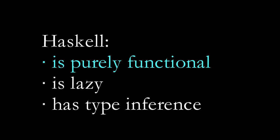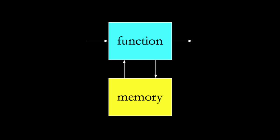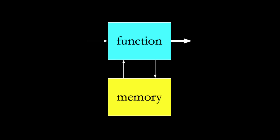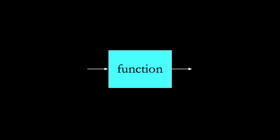In most other programming languages, you can think of a function like this: when we call it, the function takes input and looks at the state of memory — the values of variables. The function can then either modify what's in memory (this is called a side effect), return a result, or both. Haskell is a purely functional language, so functions never consult memory or have side effects. Given the same input, a Haskell function always produces the same output.